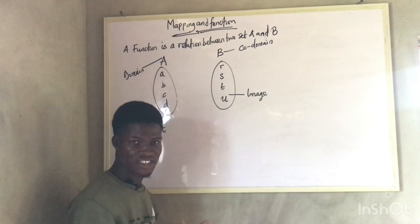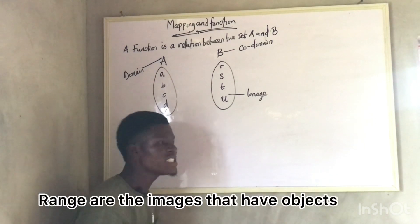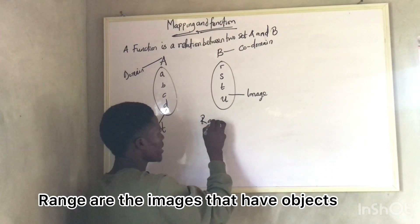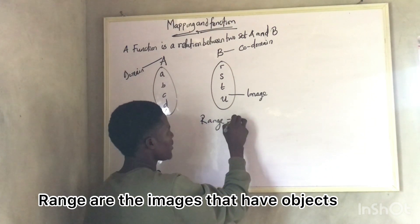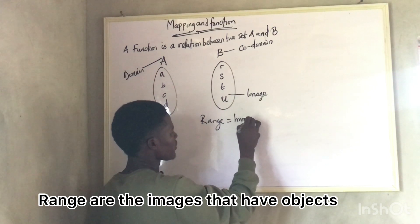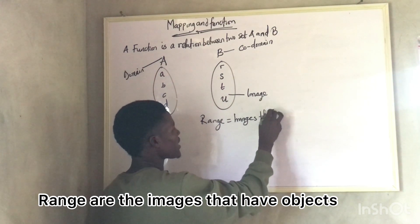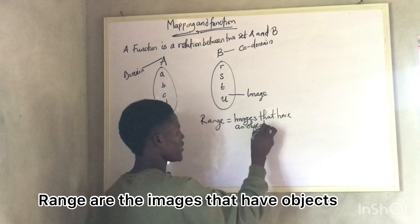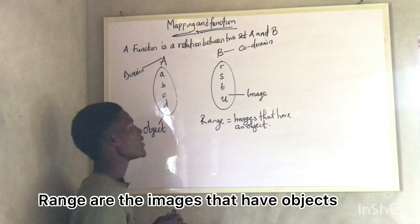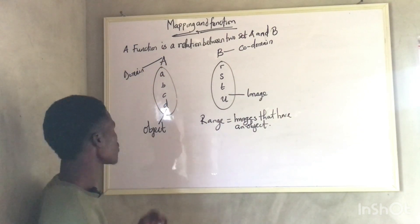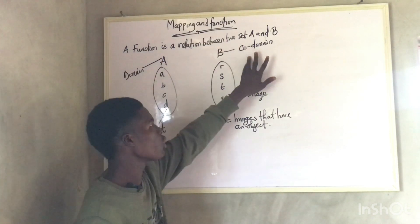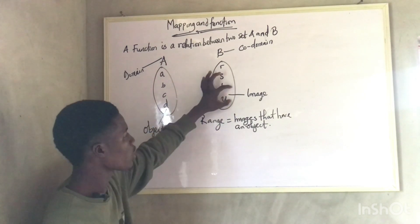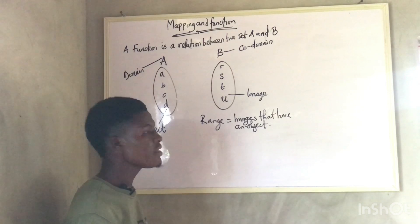Are we getting that? Now, we also have something called the range. What is range? Range are the images that have objects. So the A is called the domain, the B is called the co-domain, elements in the domain are called objects, and elements in the co-domain are called images.